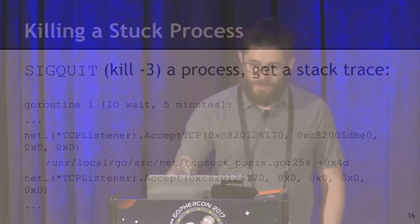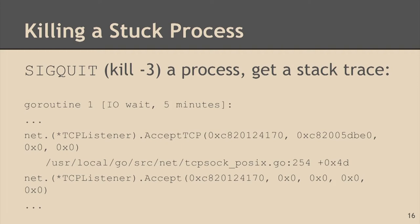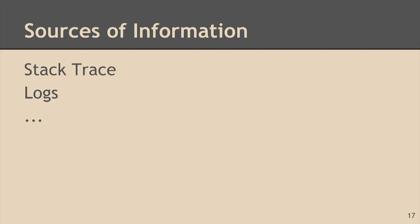How do you get information out of your process? One thing you can do if you're dealing with a stuck process is use SIGQUIT instead of kill -9. In Go, this will dump out a stack trace of every goroutine, which is pretty cool. You can see this application that I SIGQUITed was just sitting there accepting TCP, just waiting. So our sources of information include a stack trace from a stuck process, and obviously there's logs.